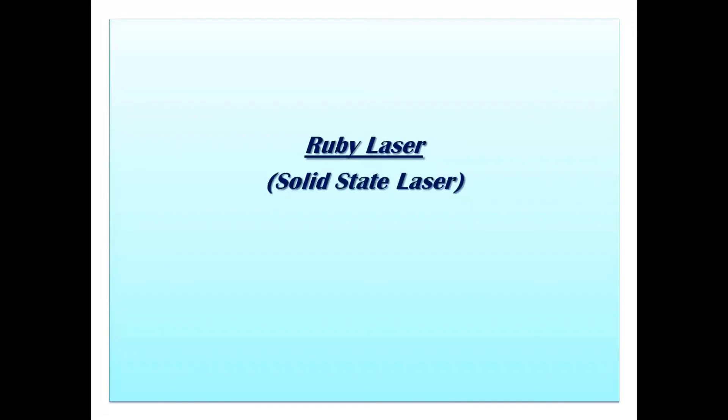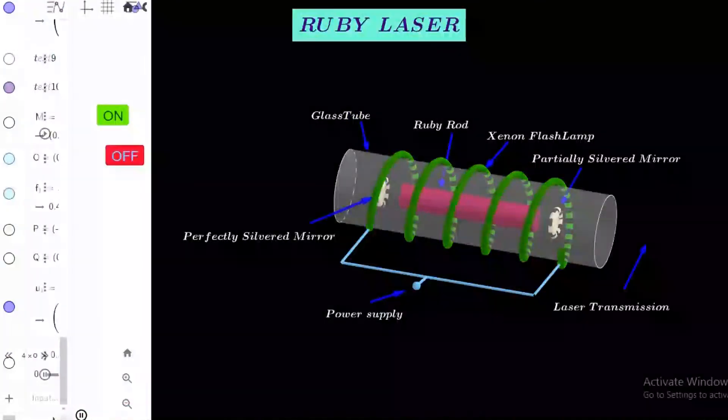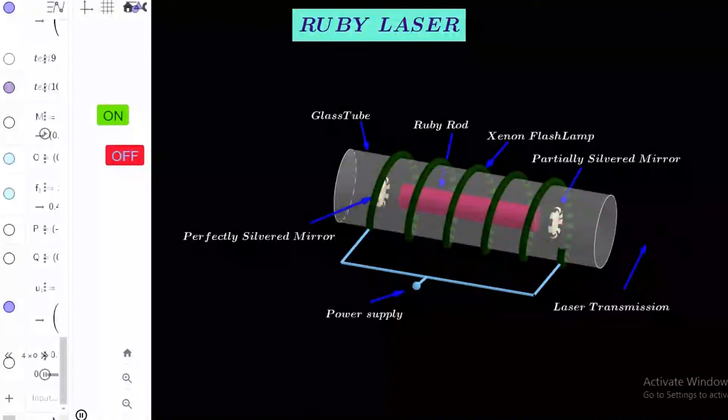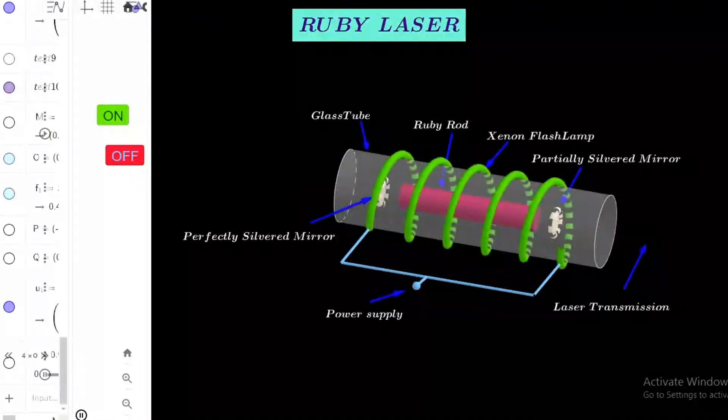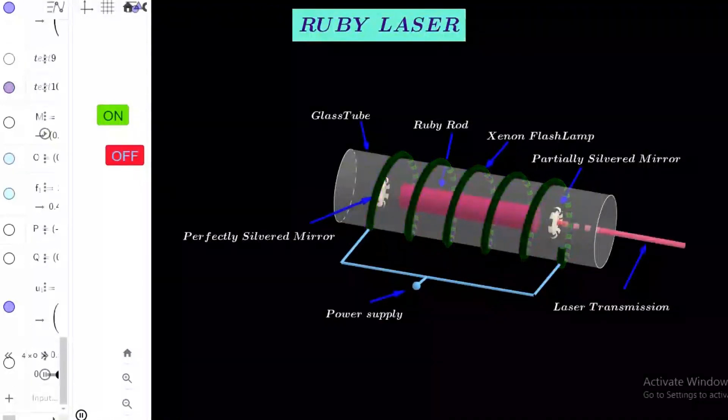Now let's see the construction. It consists of a ruby crystal which works as amplifier, a flash tube as the energy source, a glass tube, power supply, a perfectly silvered mirror, and a partially silvered mirror.